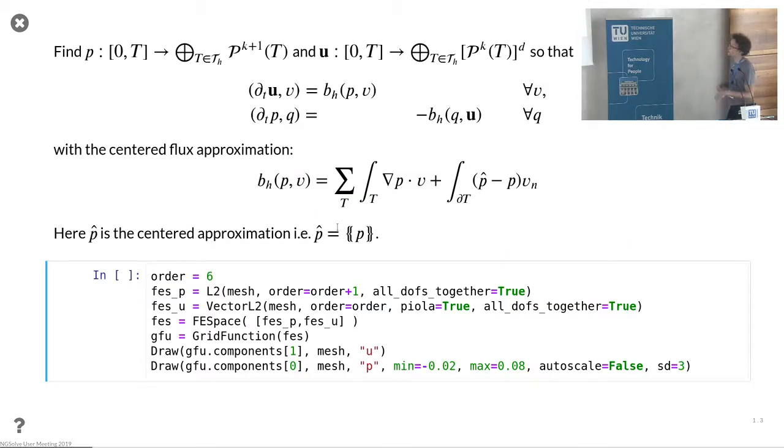We consider simple geometry, so a unit square, and we want to formulate a structure preserving formulation in the sense that we have the same bilinear form involved to discretize the gradient and at the same time the divergence of u.